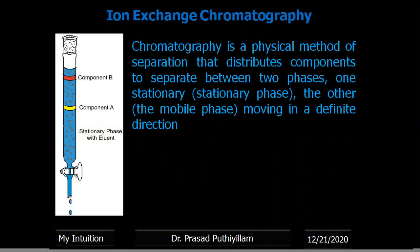Chromatography is one of the physical methods to separate or distribute components based on the stationary as well as the mobile phase — the mobile phase which is moving in a definite direction. Here is a schematic representation of chromatography showing a mobile phase and a stationary phase through which components A and B are passed. Based on their size or capability to pass through that medium, separation takes place and we can separate a mixture into component A and component B.